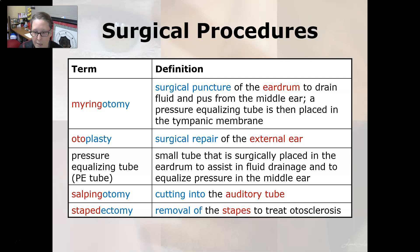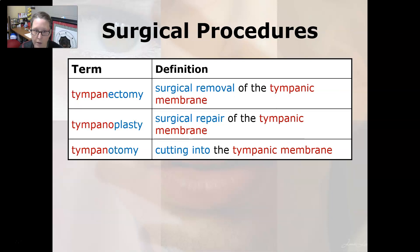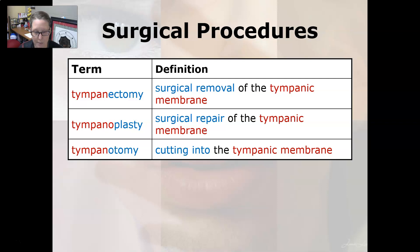Salpingotomy is cutting into the auditory tube, and stapedectomy is the removal of the stapes to treat otosclerosis. Tympanectomy is the surgical removal of the tympanic membrane, and tympanoplasty is the surgical repair of the tympanic membrane. Tympanotomy is cutting into the tympanic membrane.